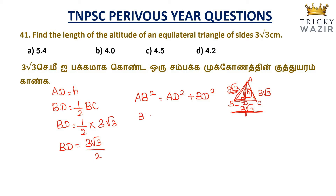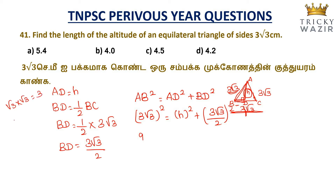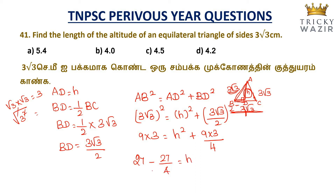AB value is 3 root 3. So (3 root 3)² equals H² plus (3 root 3 by 2)². Squaring 3 root 3 gives 9 times 3 equals 27. Squaring (3 root 3)/2 gives 27/4. So 27 equals H² plus 27 by 4.